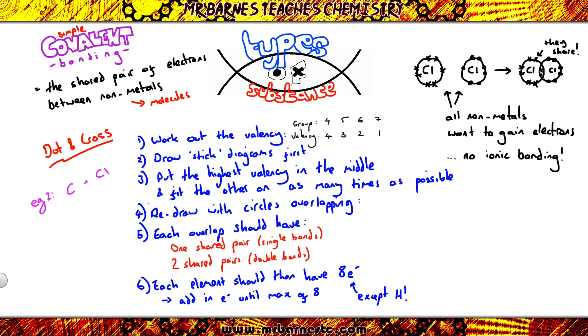If we have a look at a second example, carbon reacting with chlorine, carbon's in group four so it makes four bonds, chlorine's in group seven so it makes one bond. So I put carbon in the middle and put chlorine around the outside. So straight away I know my formula is CCl4. The next thing I want to do is redraw with circles overlapping, so I'll put my carbon in the middle and draw four circles overlapping with Cl in. I've only got single bonds so therefore I put one dot and one cross in each overlap, and then I make sure that everything has eight electrons in the outer shell. Carbon already does, but my chlorines don't so I need to fill them out to make sure they have eight.